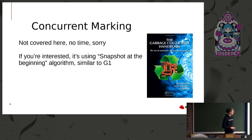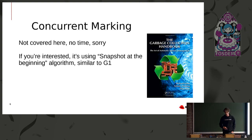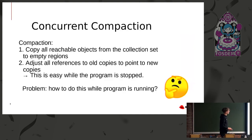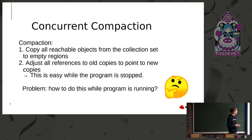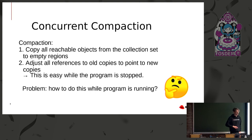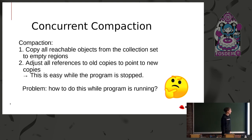I'm not going to cover concurrent marking because there's not enough time — you can look it up in the Garbage Collection Handbook or in talks that Alexei did online. Concurrent compaction: how does it work? It's easy when it's not concurrent — when the world is stopped, you copy all the reachable objects in the collection set to empty regions, then update all the references that point to the old copies to point to the new copies, and then you're done. But how do you do that when the Java program is running?